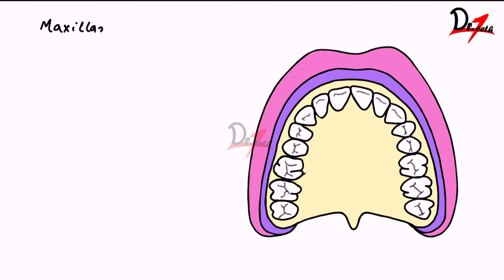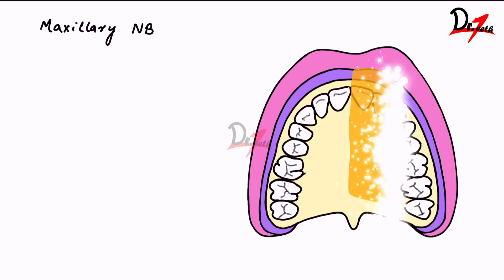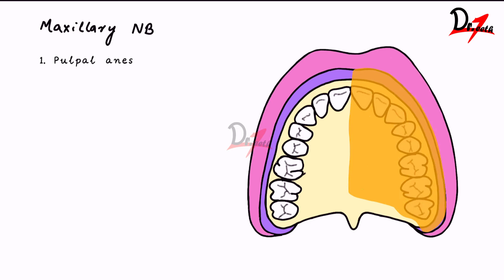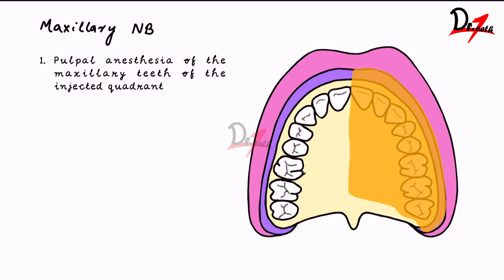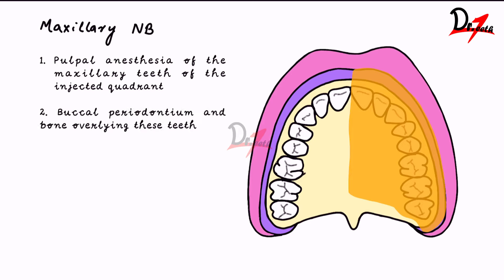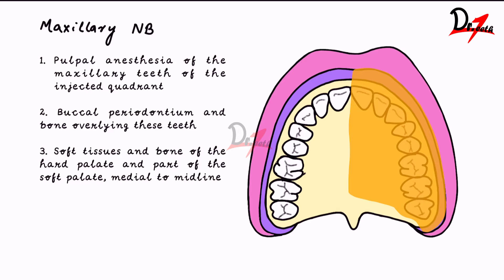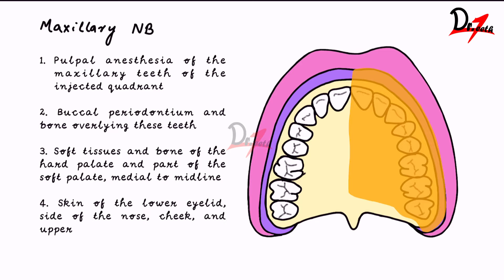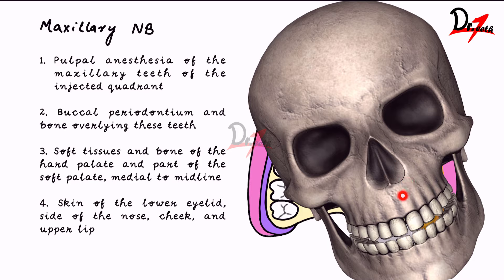Then we have the maxillary nerve block, which anesthetizes the entire quadrant on the injected side. It provides pulpal anesthesia of all maxillary teeth of the injected quadrant from the incisors to the molars, buccal periodontium and bone overlying these teeth, soft tissues and bone of the hard palate and part of the soft palate medial to the midline. In addition, it covers the skin of the lower eyelid, side of the nose, cheek, and upper lip — similar to what we saw in the infraorbital nerve block.